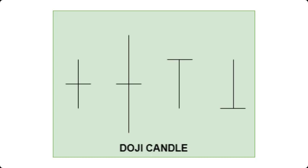Today we will see how to programmatically find out if a candle is a doji candle or not, in the TradingView Pine script. A doji is a name for a trading session in which a security has open and close levels that are virtually equal, as represented by a candle shape on a chart.